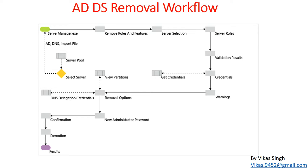This is the AD removal workflow which we have worked on in the last two videos. First, we need to go to Server Manager, then Remove Roles and Features, select the server from which we want to remove the server role. It will give us a validation result, and if it says you need to demote the Active Directory server first, then you need to run DCPromo and demote the server using the proper credentials.